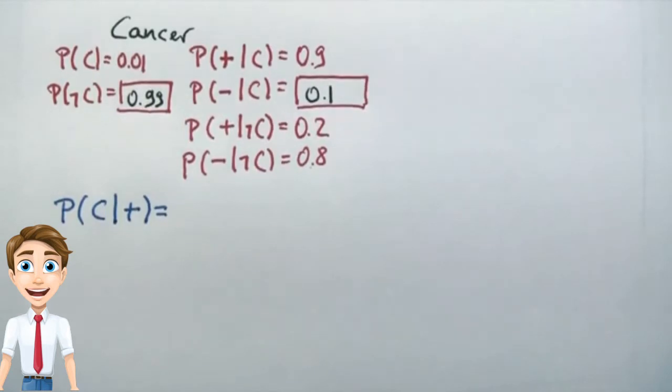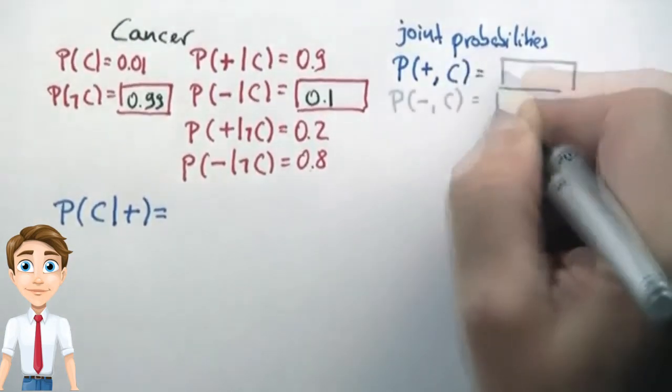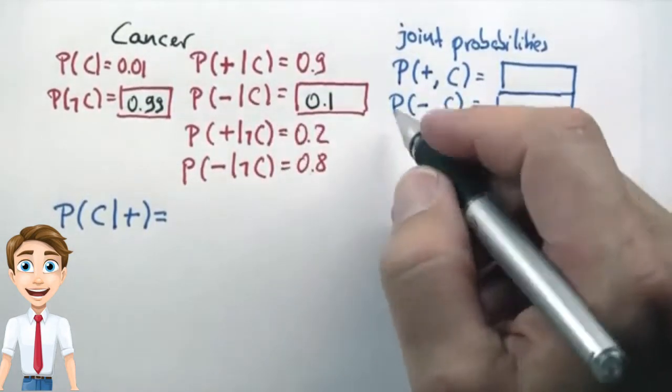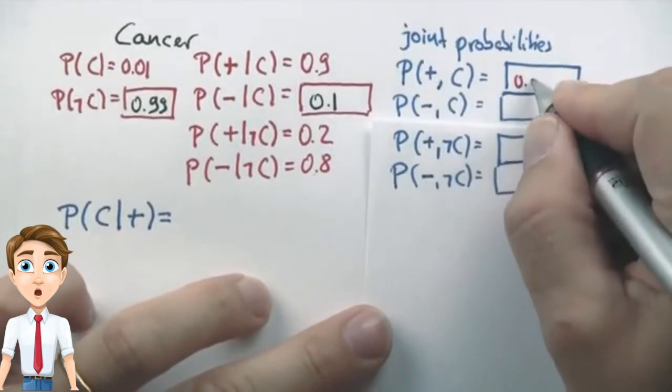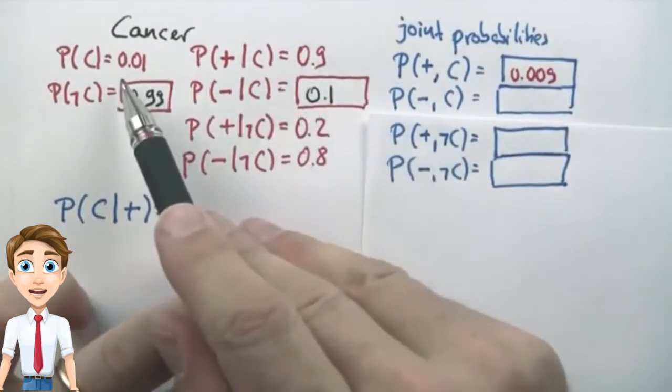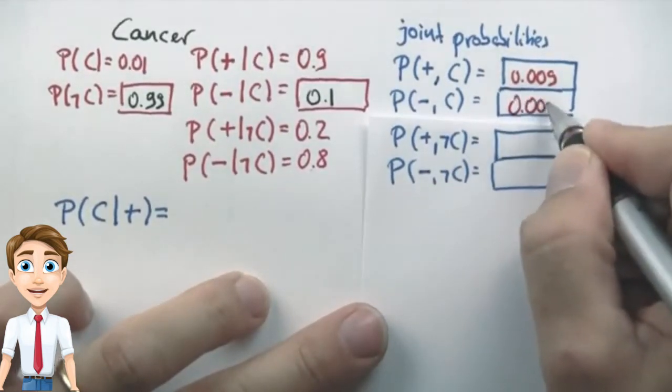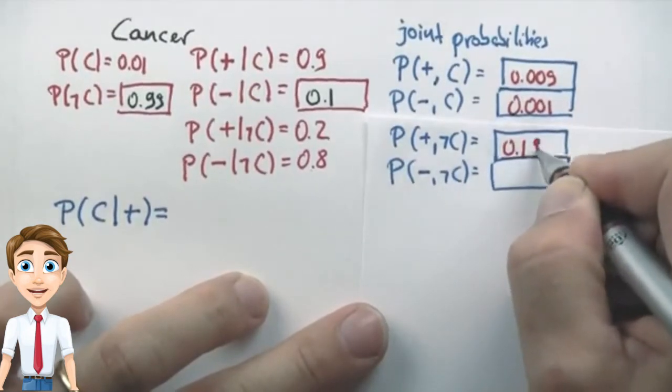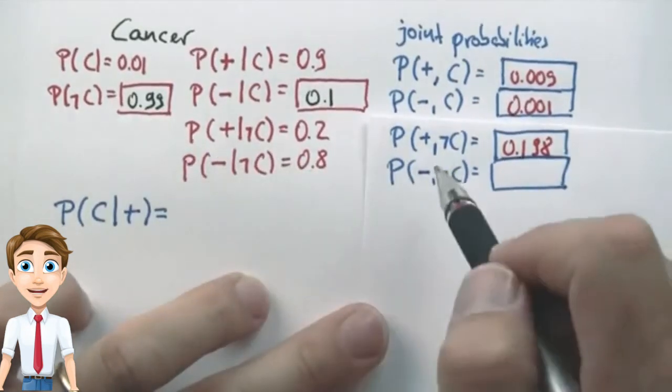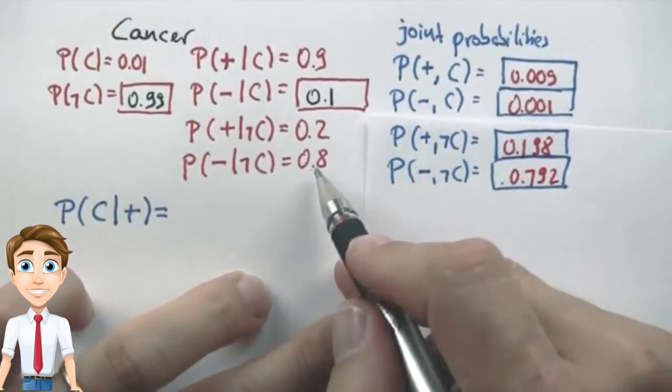Before I do this, please help me filling out some other probabilities that are actually important, specifically the joint probabilities: probability of a positive test and having cancer, probability of a negative test and having cancer. This is not a conditional anymore, it's now a joint probability. Here are the correct answers: 0.009, which is the product of your prior 0.01 times the conditional 0.9. We get 0.001, probability of the prior cancer times the 0.1. We get 0.198, probability of not having cancer is 0.99 times still getting a positive reading, which is 0.2. And finally, we get 0.792, which is the probability of this guy and this guy.